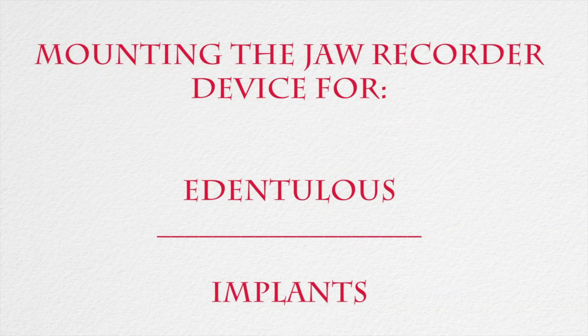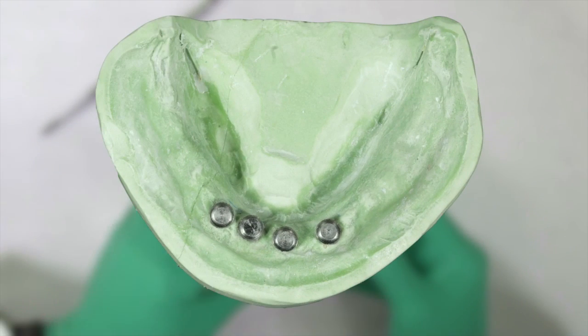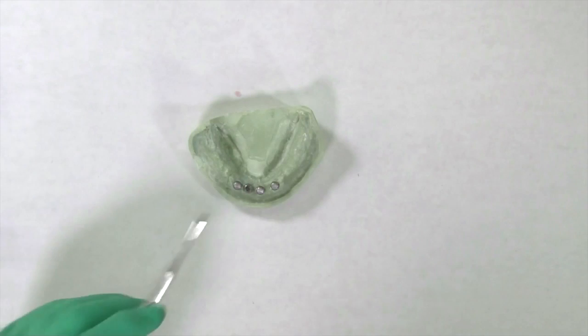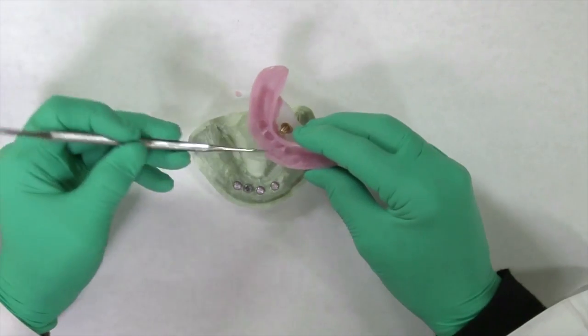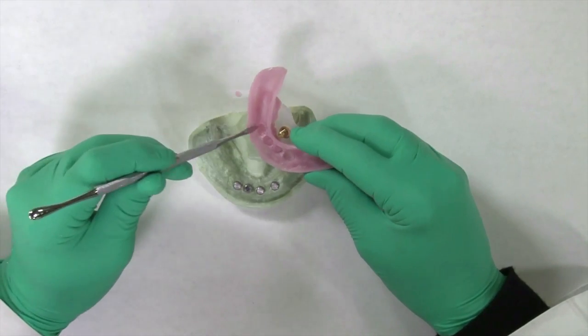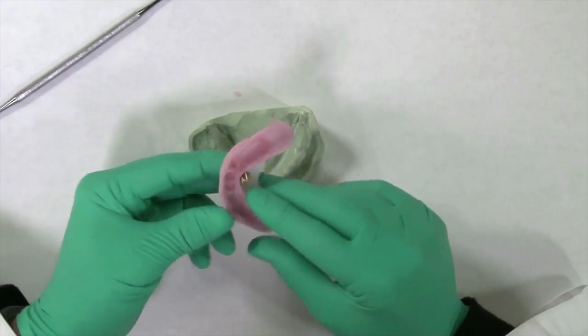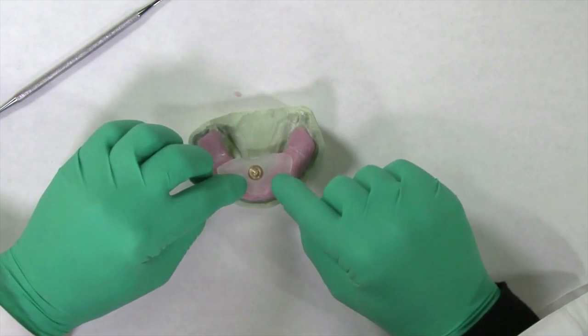Mounting the Mossad jaw recorder for the edentulous arch against implant overdenture. If a patient is to have mandibular implants, the lower base plate can be fabricated with recesses to fit over the retentive elements of the implants. This will prevent rocking of the base plate due to incomplete seating over the implants. If there is concern as to the clearance of the base plate over the implants, holes can be cut in the base plate to ensure seating, and to provide visual confirmation of this seating.